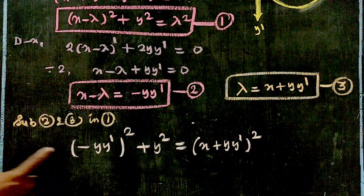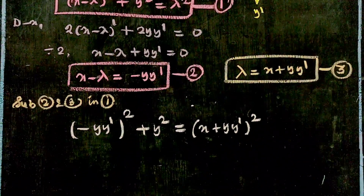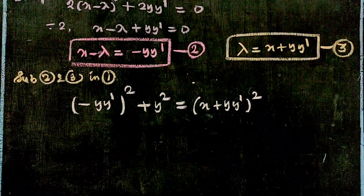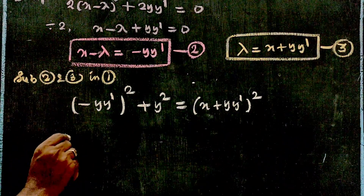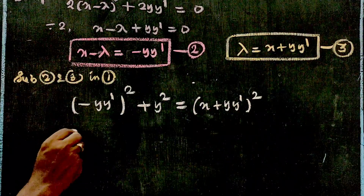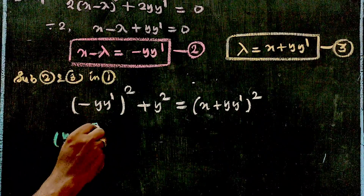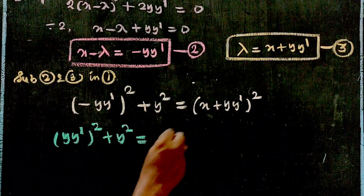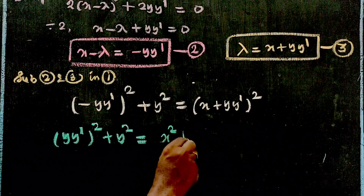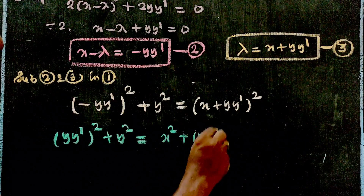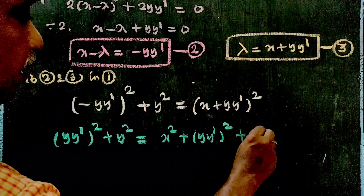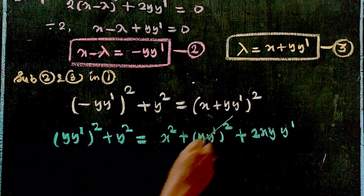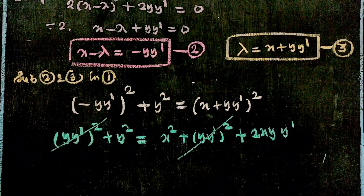Expanding: y²·(y')² + y² = x² + (y·y')² + 2x·y·y'. The y²·(y')² terms cancel from both sides.